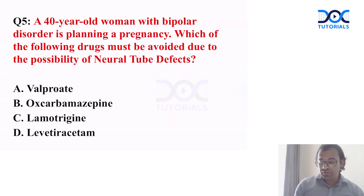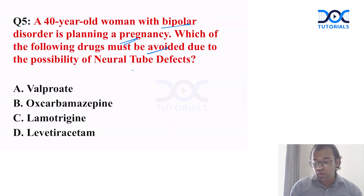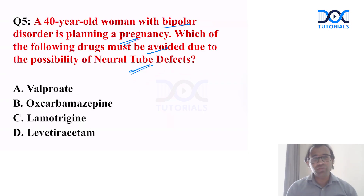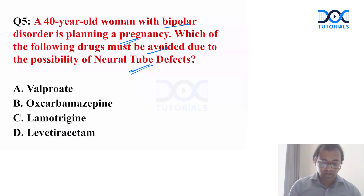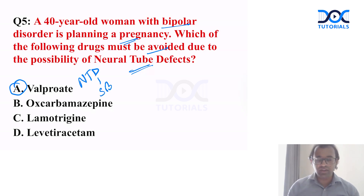Fifth question: a 40-year-old woman with bipolar disorder is planning to have a pregnancy — which of the following drugs must be avoided due to the possibility of a neural tube defect? This is the easiest question. As discussed in class, the mood stabilizer that should never be used during pregnancy is valproate, because of the higher risk of neural tube defect and spina bifida.